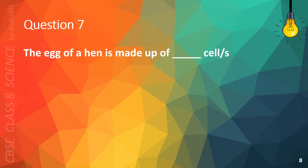Question 7. The egg of a hen is made up of blank cell or cells. A. 1. B. 25. C. 100. Or D. 0. The correct answer is A. 1.